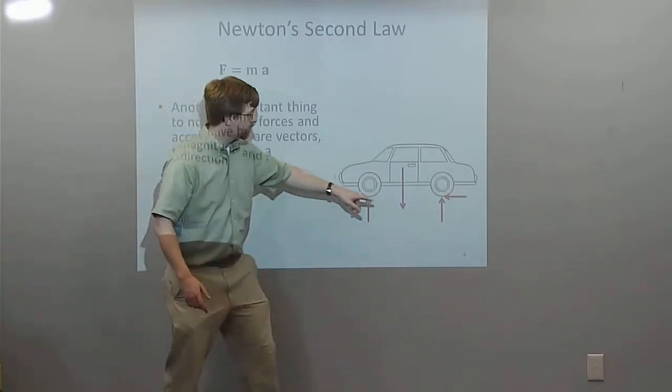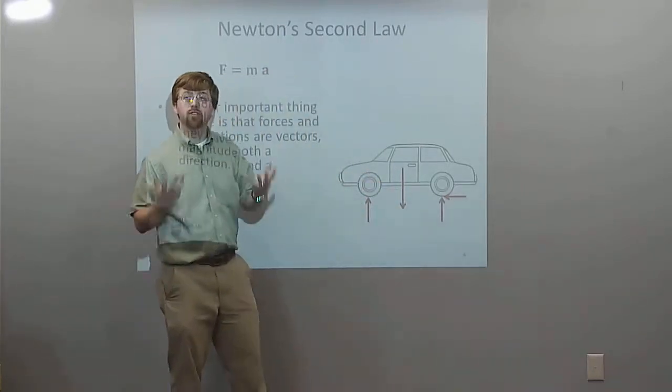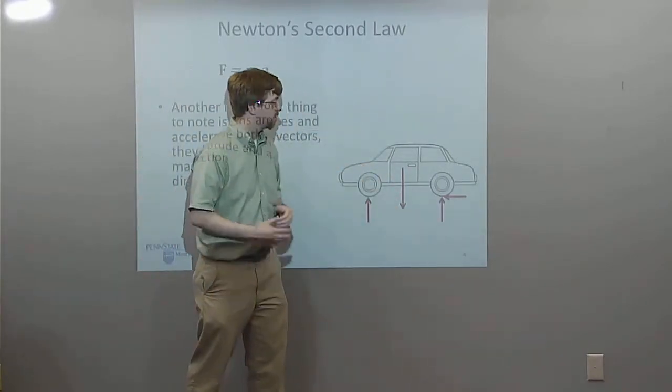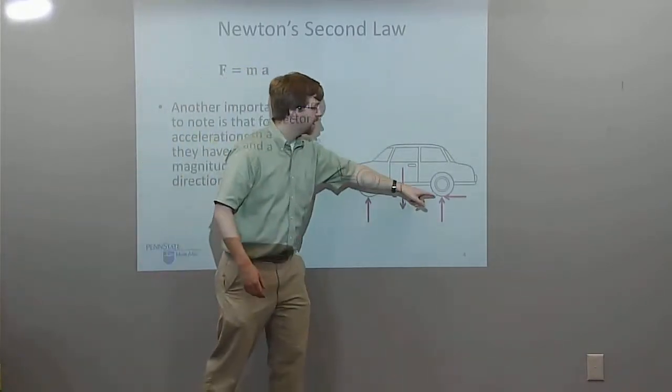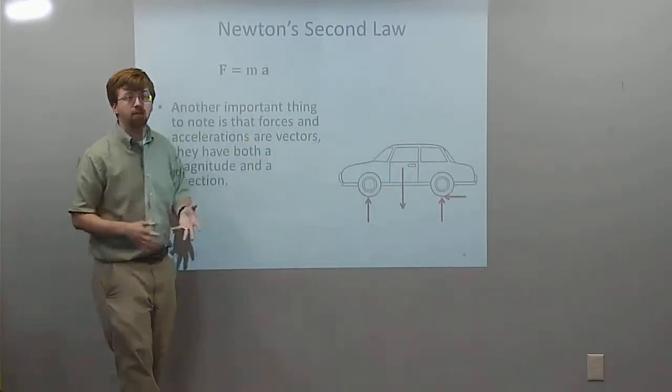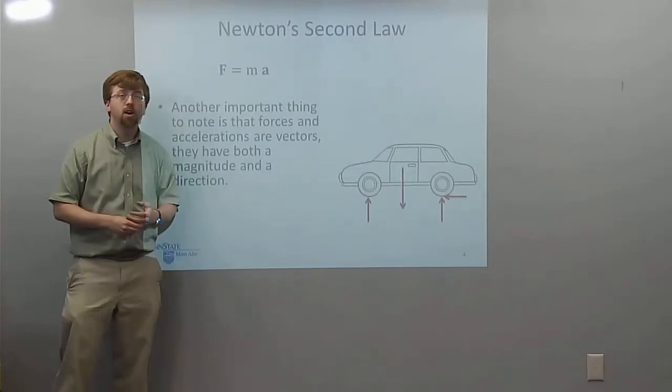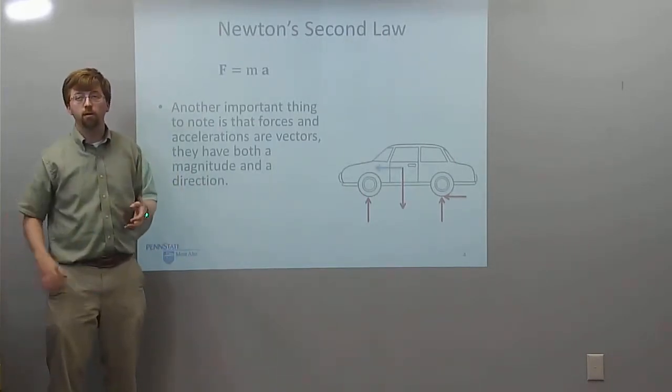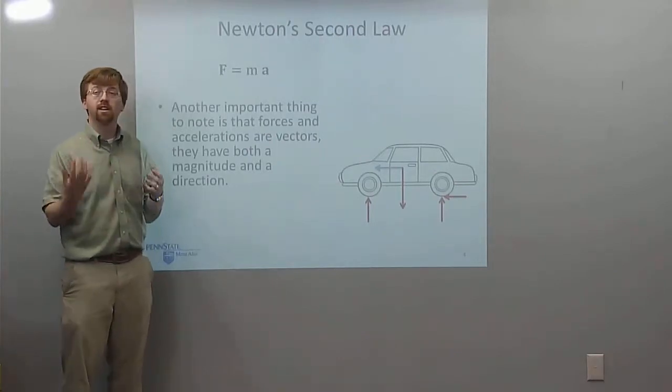So we've got two forces. Those are normal forces on the tires supporting the car. We've got a gravity force pulling it down. And finally, if the car is accelerating, we've got a friction force right here that is pushing the car forward. If we add all those vectors together, we're going to get the net force. And from the net force, if we know the mass, we can get the acceleration.